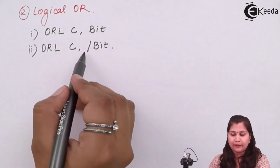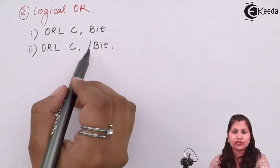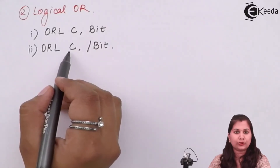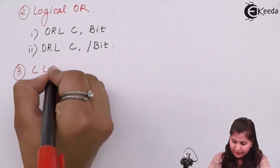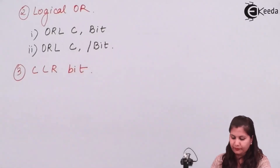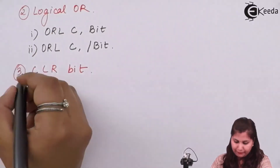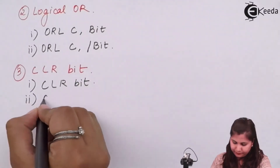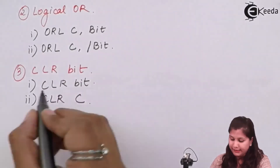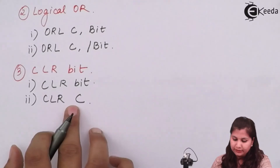The third type is CLR bit. CLR bit means the contents of the bit address specified are cleared. Similarly, CLR C clears the carry flag.